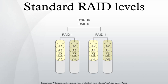Applications that make small reads and writes from random disk locations will get the worst performance out of this level. The requirement that all disks spin synchronously, aka lockstep, added design considerations to a level that didn't give significant advantages over other RAID levels, so it quickly became useless and is now obsolete. Both RAID 3 and RAID 4 were quickly replaced by RAID 5. RAID 3 was usually implemented in hardware, and the performance issues were addressed by using large disk caches.